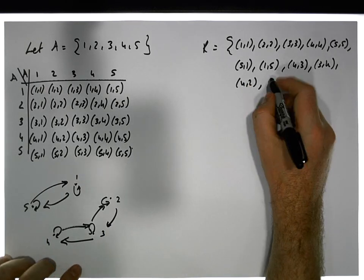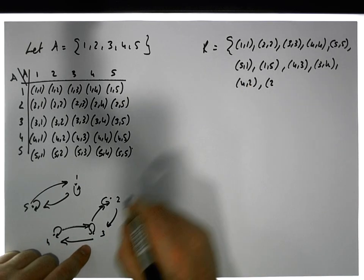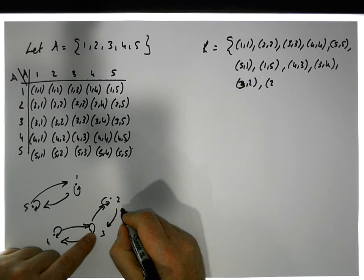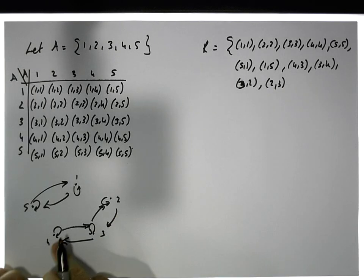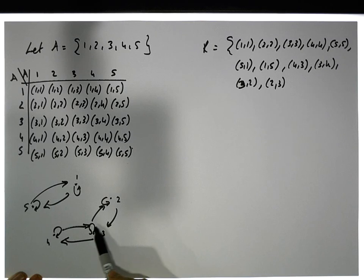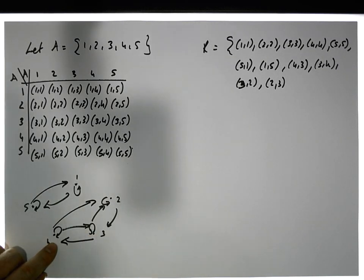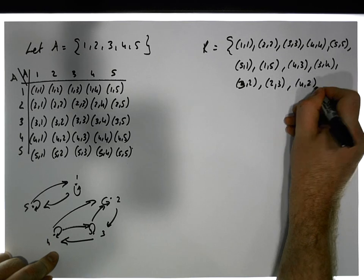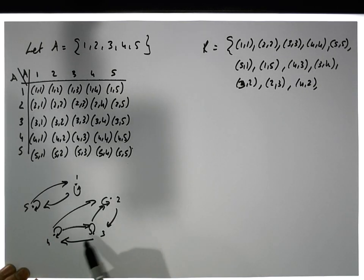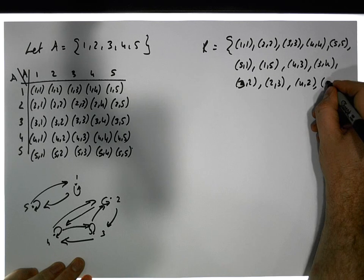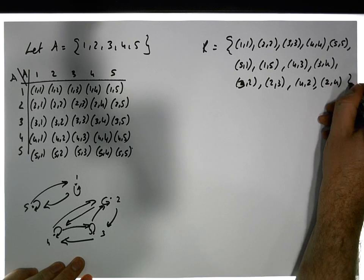Let's say we can also go from four to two, so we must be able to go from two to four. We also have three to two and two to three as symmetric pairs. Now for transitivity: we can go from four to three and three to two, so we should be able to go directly from four to two. And we can go from two to three and three to four, so we should be able to go directly from two to four, which now makes this relation...